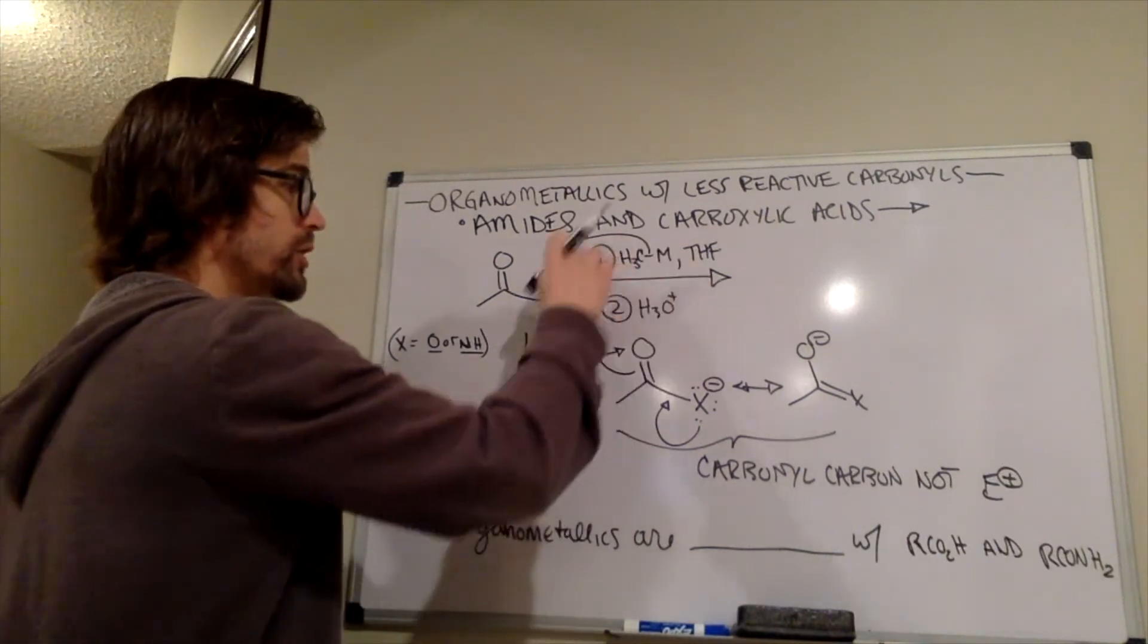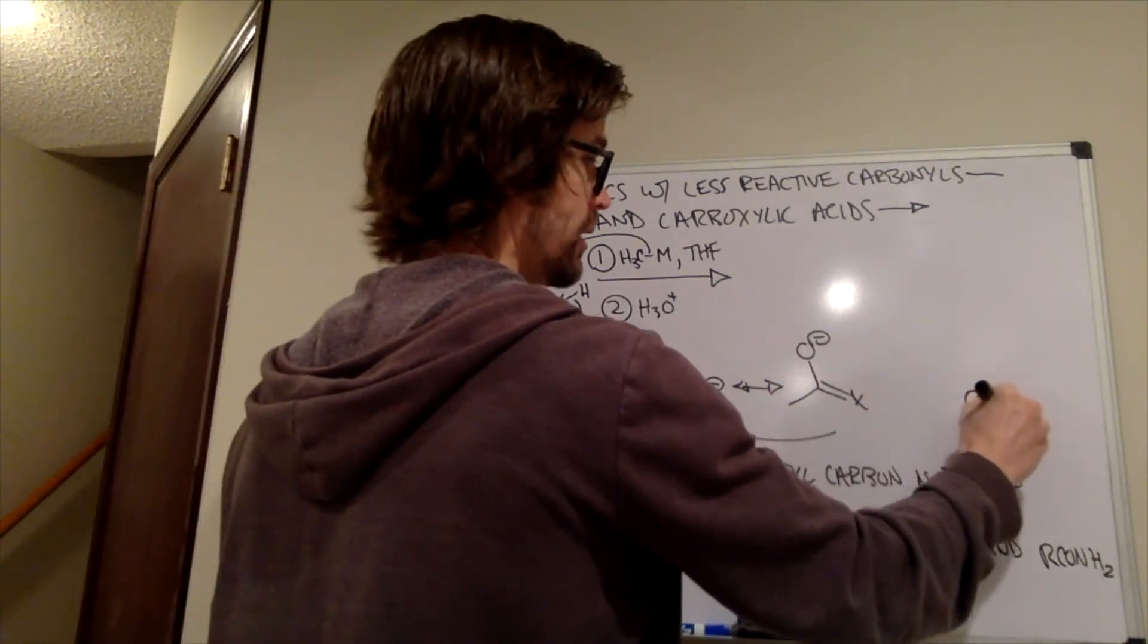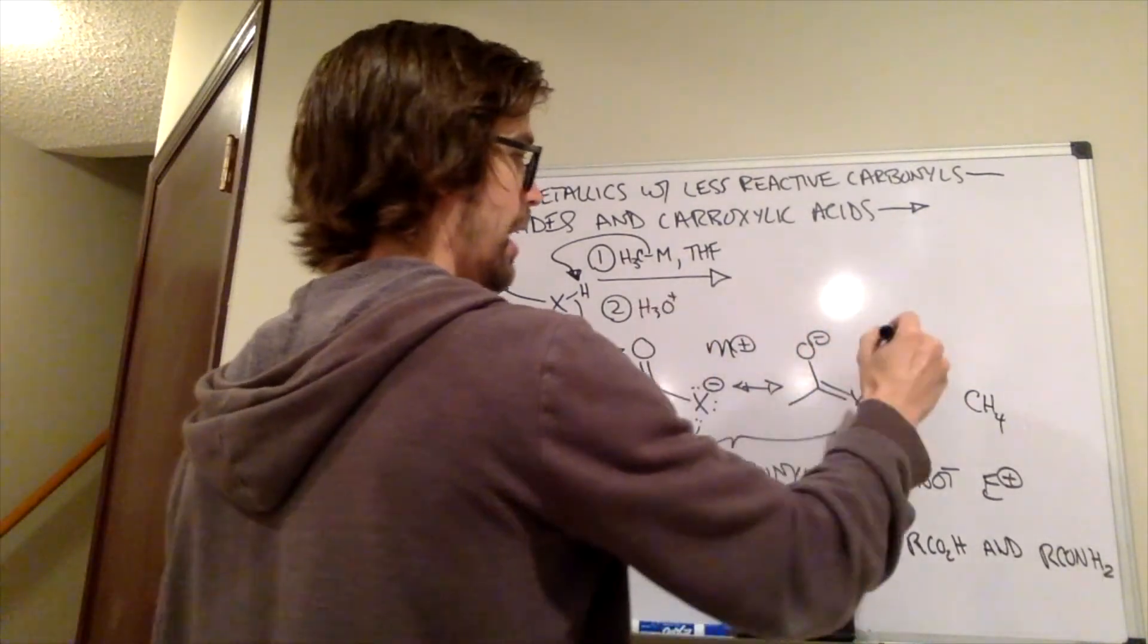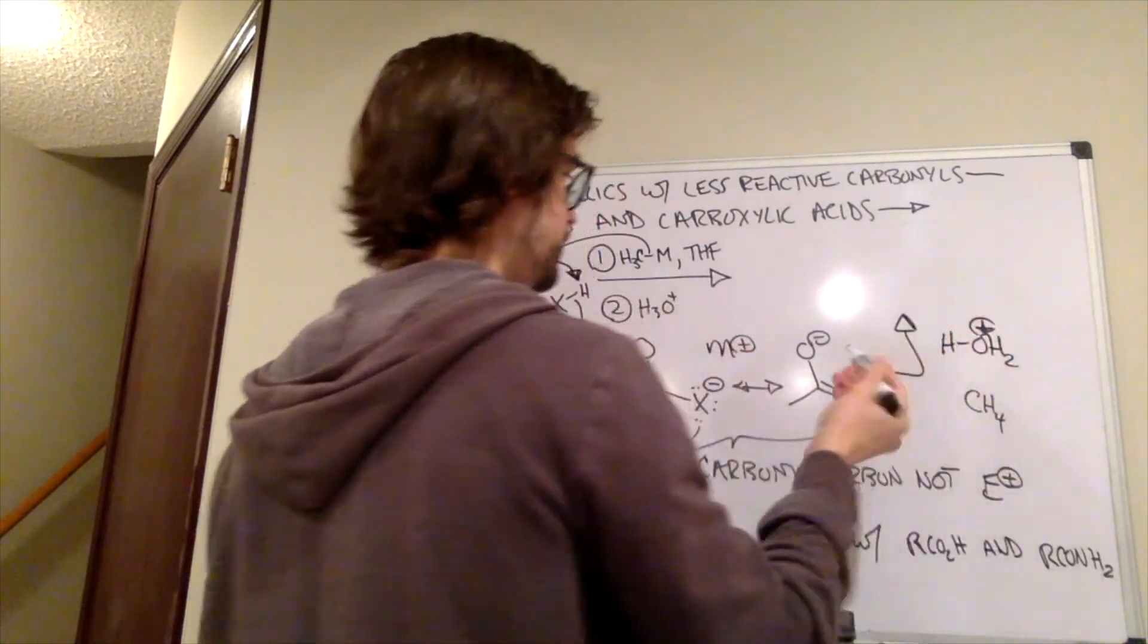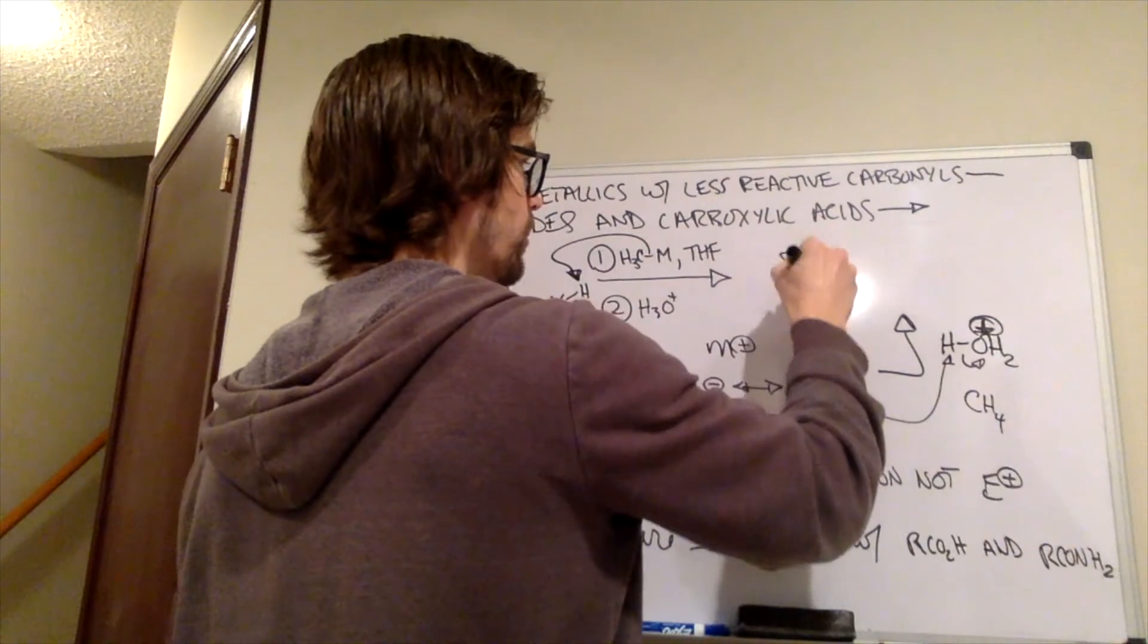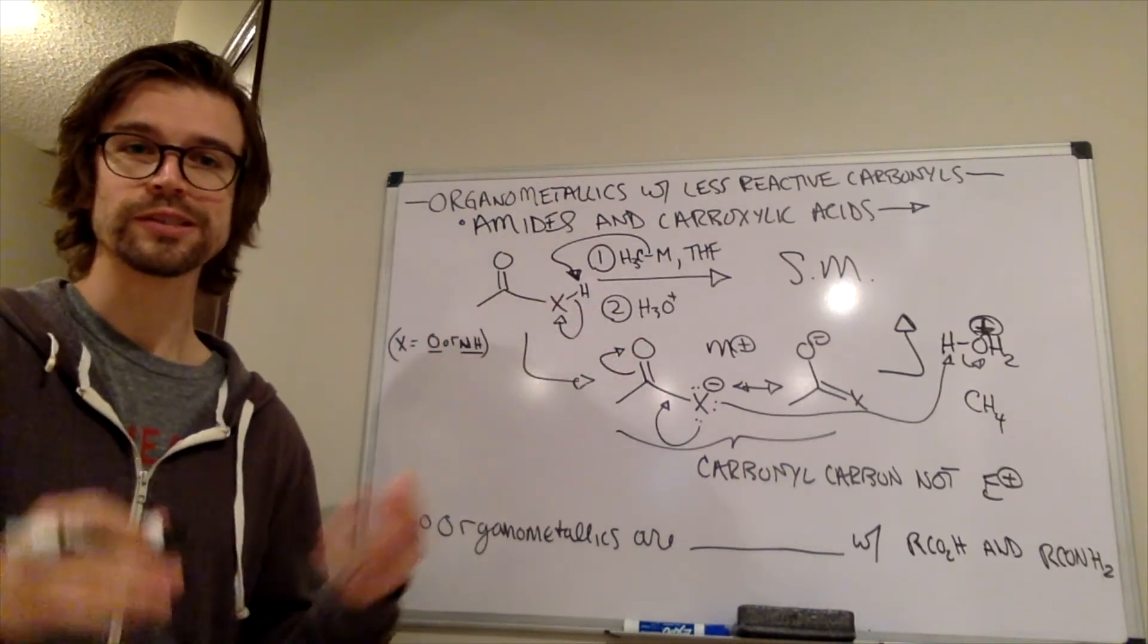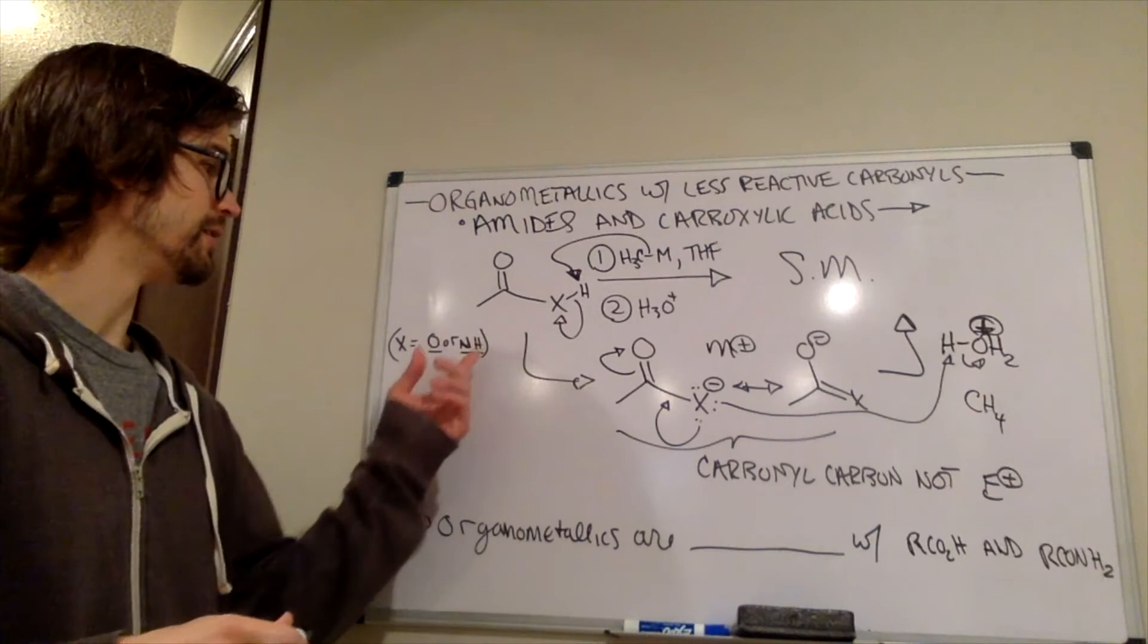So essentially once we add the first reagent here, we're just going to be stuck in this situation right here where we have made CH4 from our CH3 metal. We have a counter ion over here M+ that's balancing that negative charge. But then as soon as we add our second step, our H3O+, H3O+, this would just reprotonate to reform the starting material. So this would not be a useful reaction. We are not going to want to do this type of thing. We would not use an organometallic reagent on a carboxylic acid or an amide that has acidic NHs. That would be a mistake.